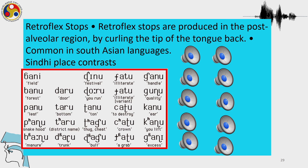These are the retroflex stops produced by a Sindhi speaker. First I will produce the set of sounds: first is an inclusive and then other non-retroflex sounds, and then the other 5 sounds are the retroflex sounds. Please listen carefully.